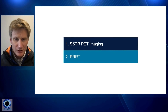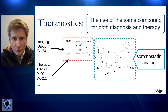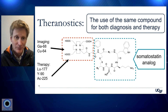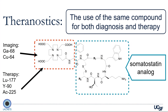Now we'll shift to PRRT. We have this term theranostics — the idea of using the same compound for both diagnosis and therapy. We take this exact same construct: the somatostatin analog attached to a chelator. In that chelator, you could put an imaging radionuclide like gallium-68 or copper-64, but you can also put other radionuclides such as lutetium, yttrium-90, or actinium-225 to treat patients. This is what PRRT is: P is the peptide, the somatostatin analog, that binds to R, the receptor — the somatostatin receptor — on tumor cell surfaces. It goes inside the cell carrying with it the second R, the radionuclide lutetium-177. That lutetium decays inside the tumor cell, giving off a beta particle or electron, causing DNA damage, leading to cell death — and that is T, the therapy. Peptide receptor radionuclide therapy.